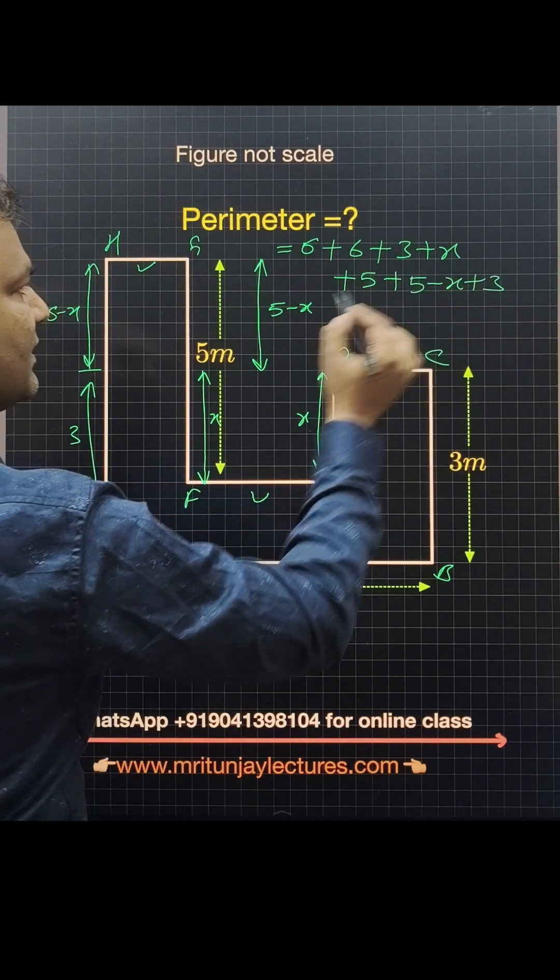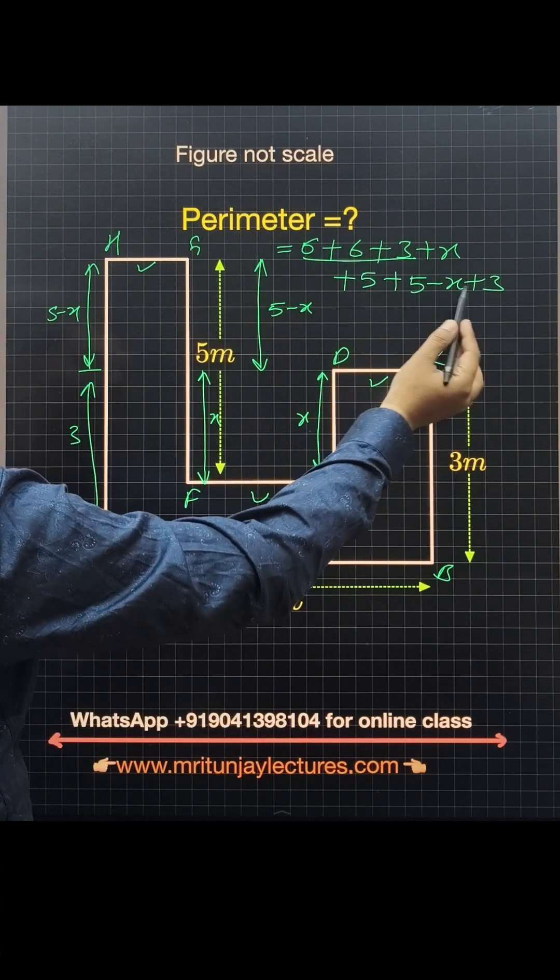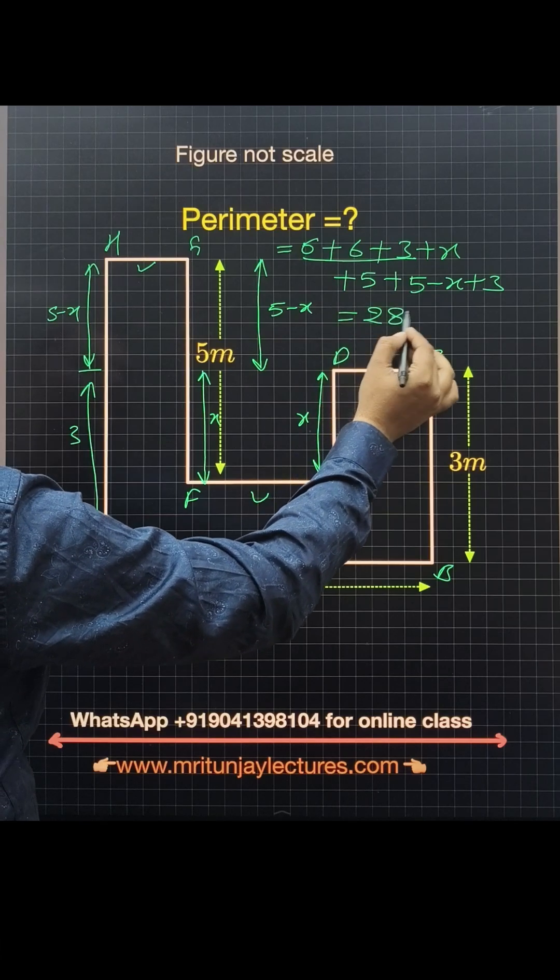The sum is 15 plus 25 plus 28. 28 meters is the right answer.